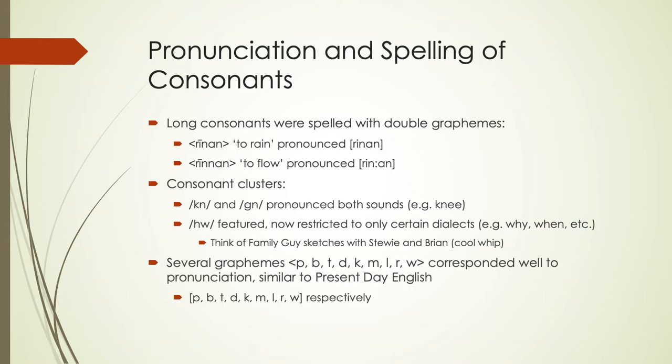There are also a lot of graphemes — the writing system — that correspond really well to pronunciation, similar to what we see in present-day English. So p, b, t, d, k, m, n, l are all sounds where the letters look very similar to the IPA pronunciation. For some of the comparison between spelling and the IPA, you'll see a lot more of that one-to-one correspondence in Old English than what we see in present-day English.